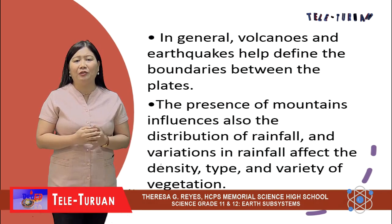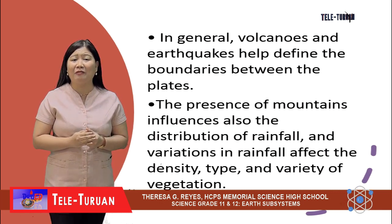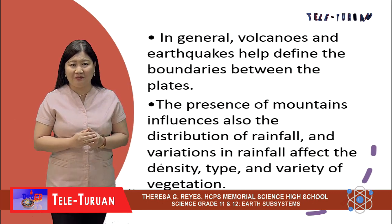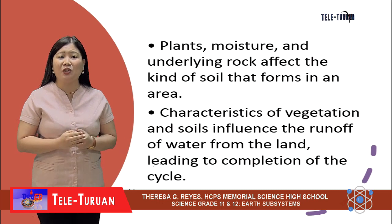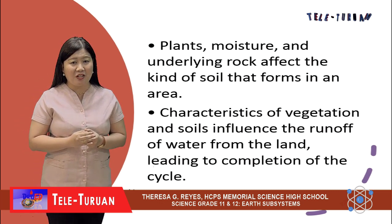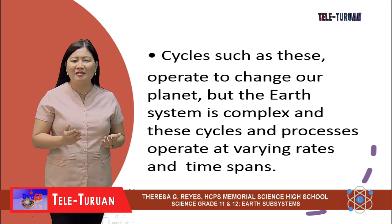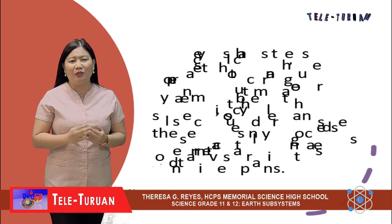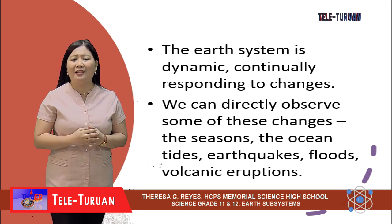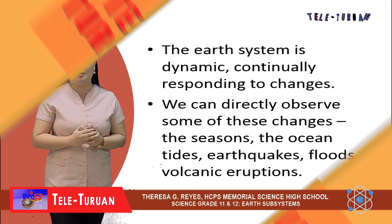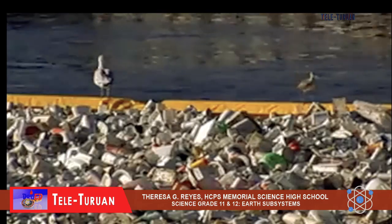In general, volcanoes and earthquakes help define the boundaries between the plates. The presence of mountains influences the distribution of rainfall, and variations in rainfall affect the density, type, and variety of vegetation. Plants' moisture and underlying rock affect the kind of soil that forms in an area. Characteristics of vegetation and soils influence the runoff of water from the land, leading to completion of the cycle. Cycles such as this operate to change our planet, but the Earth's system is complex and these cycles operate at varying rates and time spans. The Earth's system is dynamic, continually responding to changes we can directly observe — the seasons, ocean tides, earthquakes, floods, and volcanic eruptions. Other environmental changes may take years or more than a lifetime to accumulate enough modification for humans to recognize their impact.